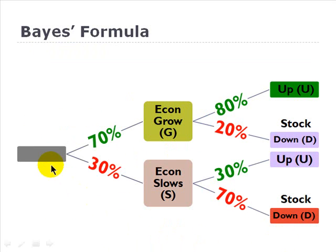Consider a very simple bimodal case where we're looking at a stock and the stock is sensitive to the economy. And so the economy, we simplistically say, has a 70 percent chance of growing and a 30 percent chance of slowing. Now the stock, our stock is sensitive to the economy.